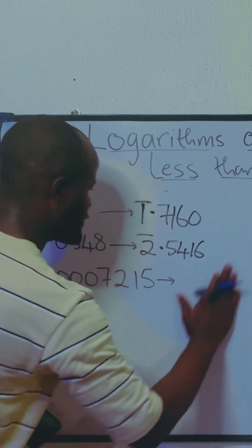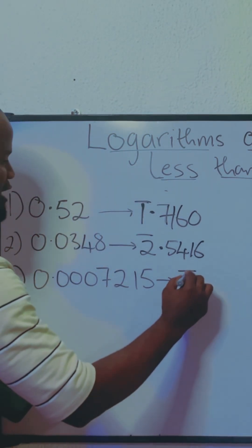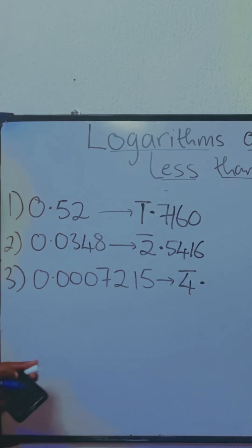And finally, you have here 1234 zeros. So that's going to be bar four points. So we're now checking the logarithm of 7.215.